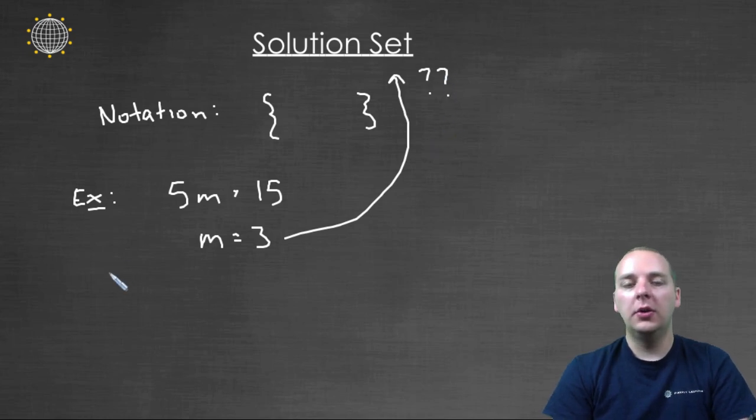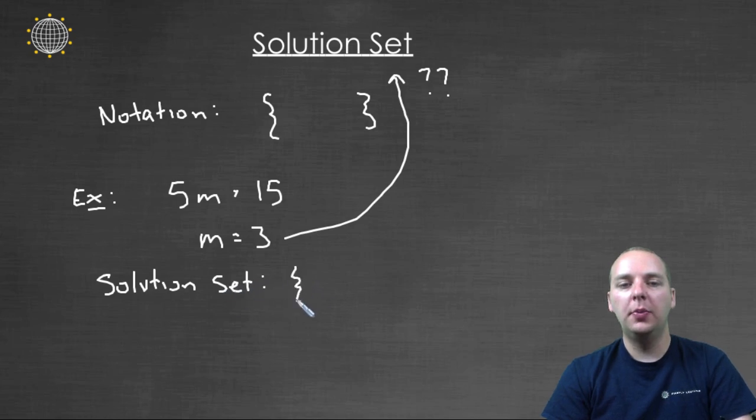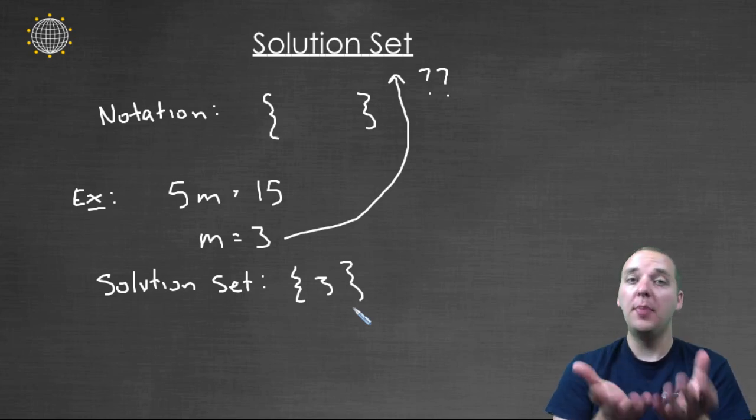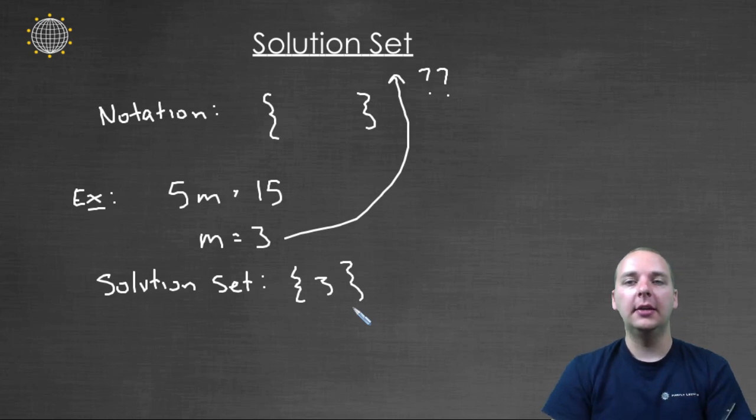Well, here's all we do. For our solution set, we'll simply put curly braces around the number 3, and that's it. We don't put m equals or anything like that. We just put braces, like a basket. We put the 3 in it, and that's it.